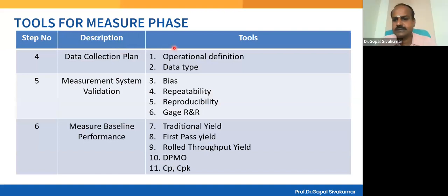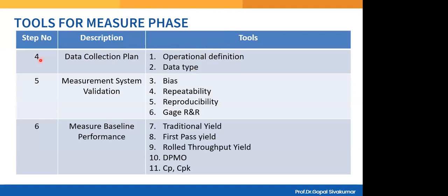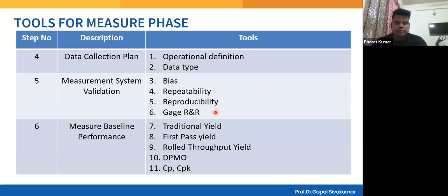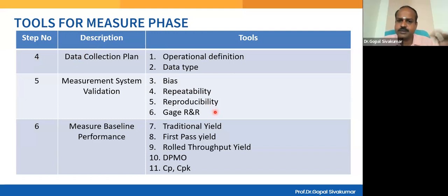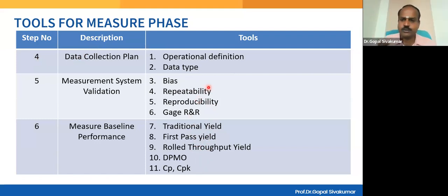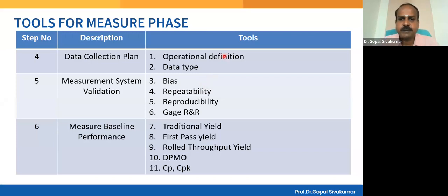The tools are: operational definition, data type — which was taught to you on day two — and measurement system validation covering bias, repeatability, and reproducibility. Then baseline performance: traditional yield, first pass yield, throughput yield, DPMO, CP, CPK. So I want to check whether you have understood correctly. What is your understanding about operational definition? One participant answers: CTQ characteristics. You are measuring CTQ characteristics — you know your CTQ, but the data collector may not know what and how to measure.